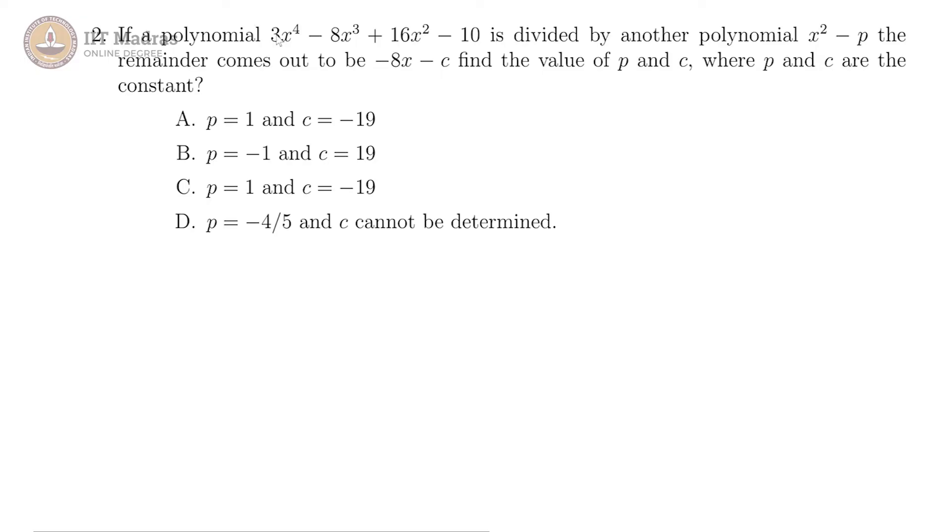In question number 2, there is this polynomial 3x power 4 minus 8x cube plus 16x square minus 10, and is divided by another polynomial x square minus p. Then the remainder comes out to be minus 8x minus c.